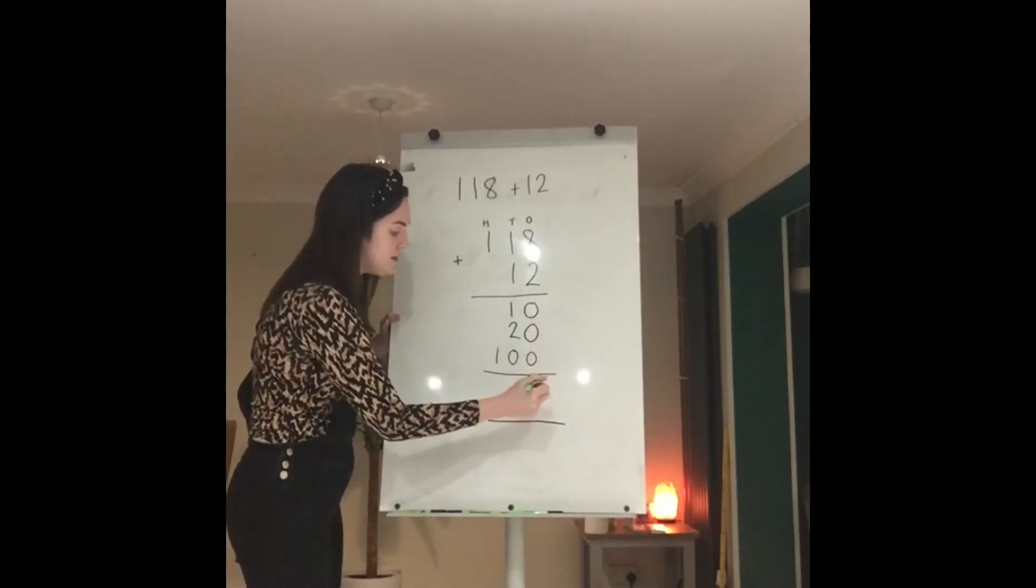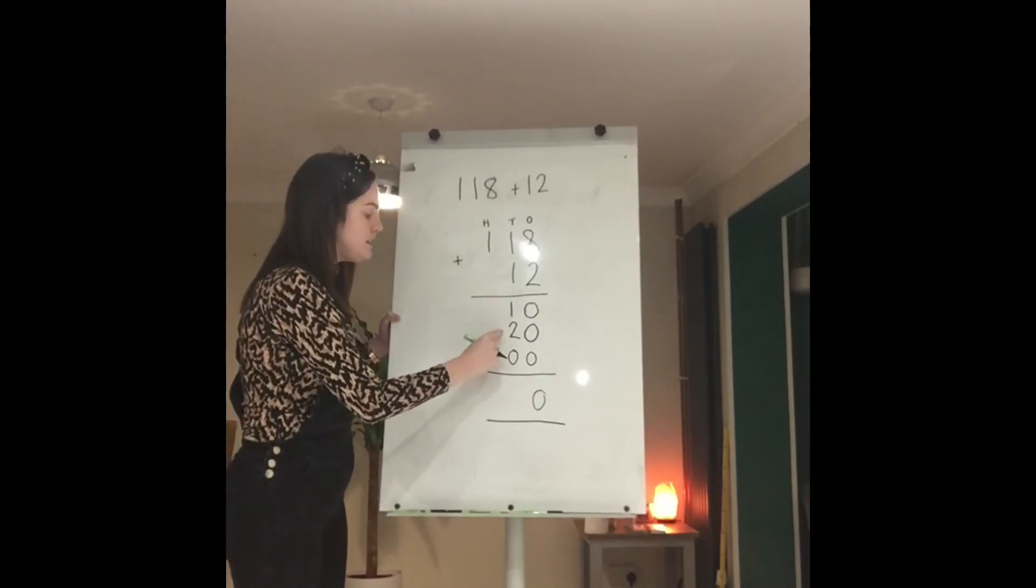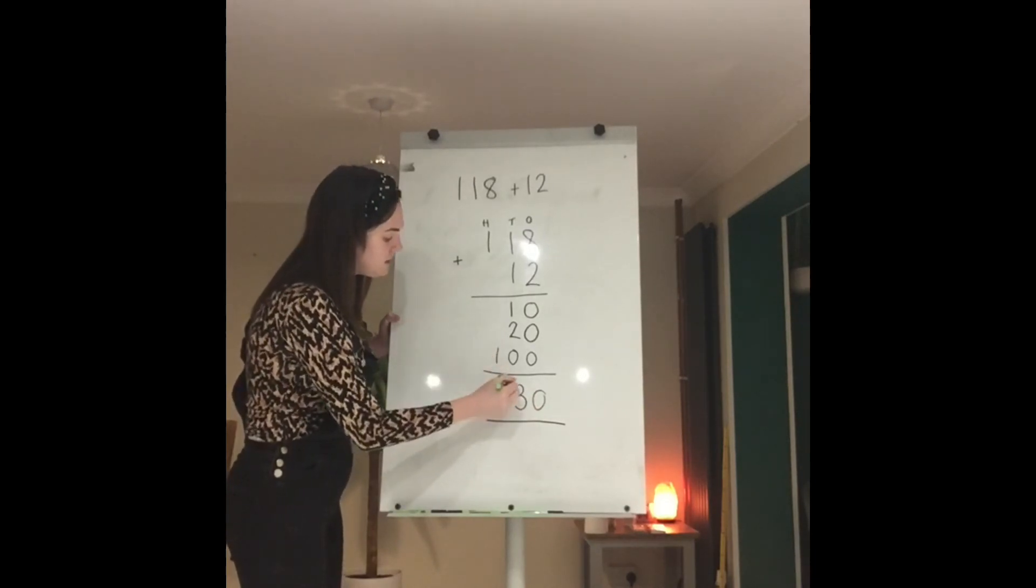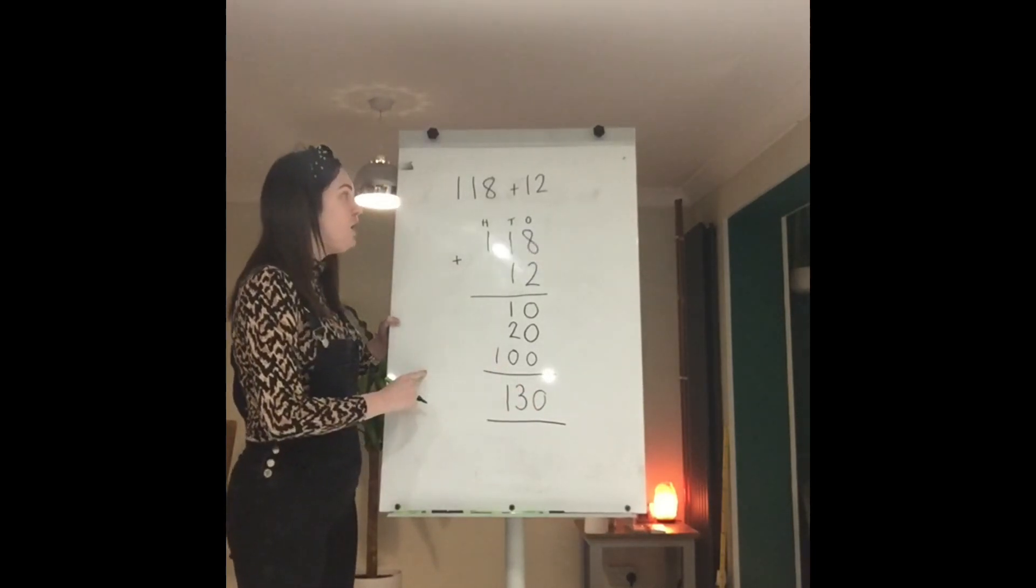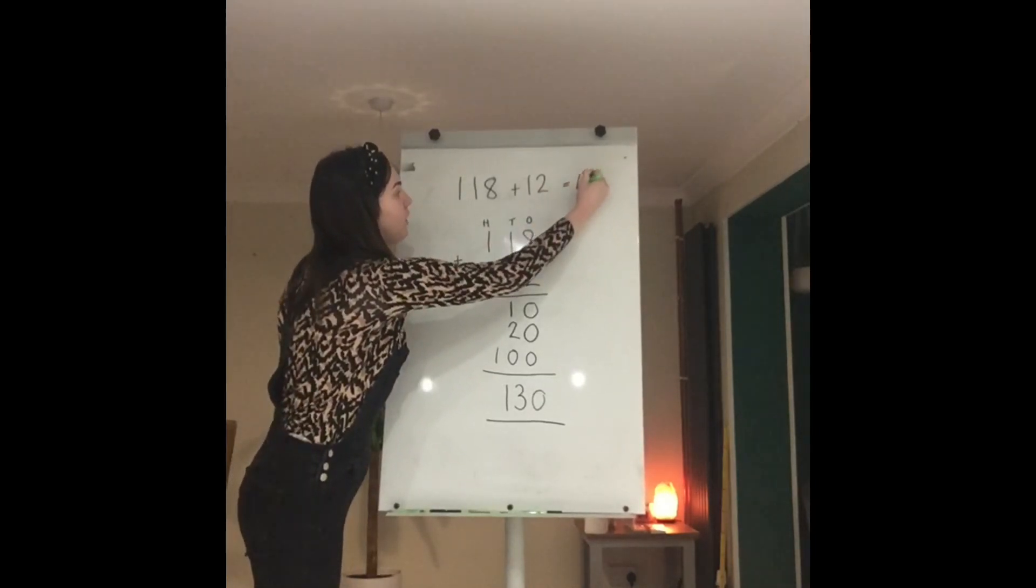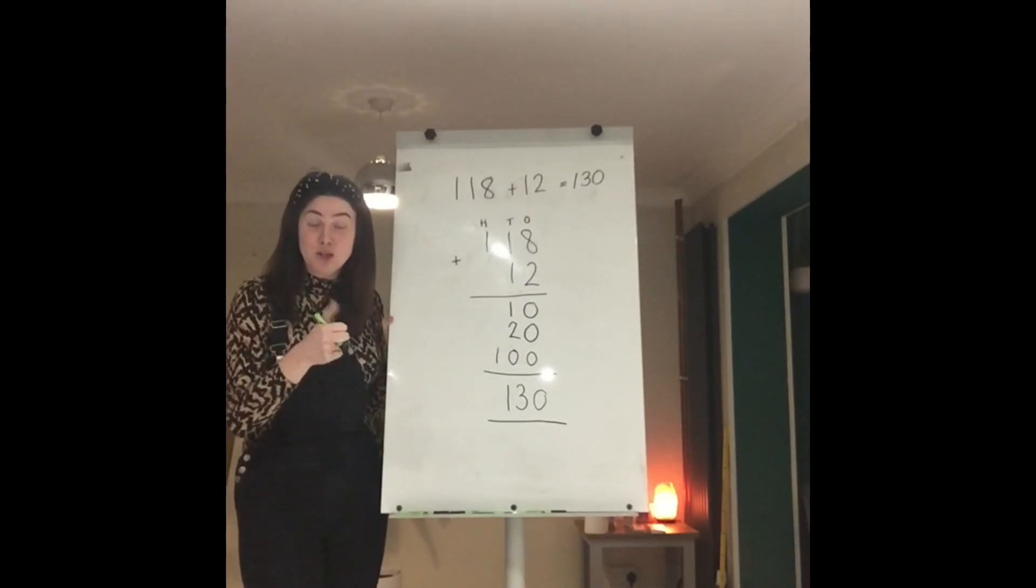0, 0 and 0 is 0 in my ones column. 10 and 20 is 30 in my tens column. And here I have my 100. We know 118 plus 12 is 130. Brilliant job, well done.